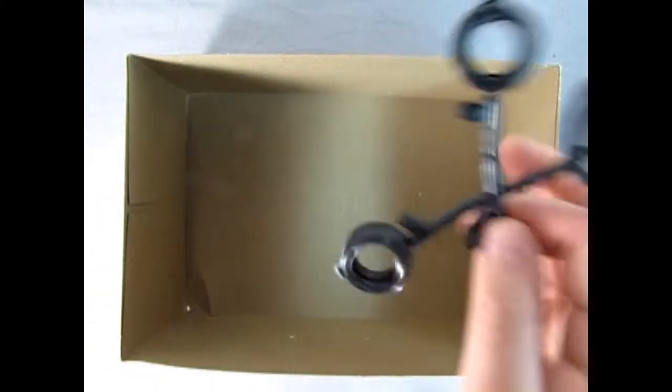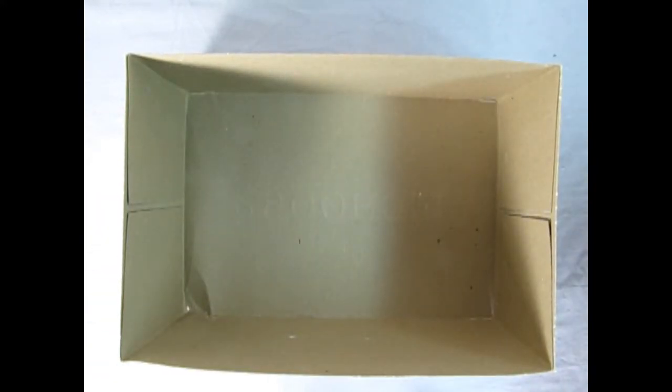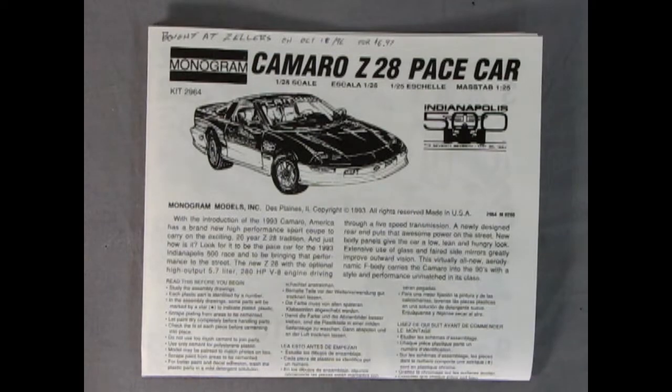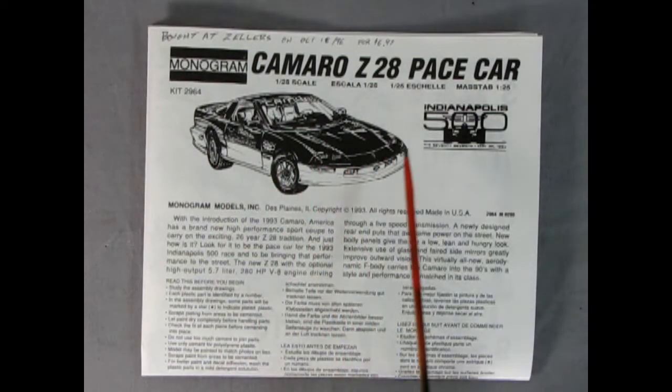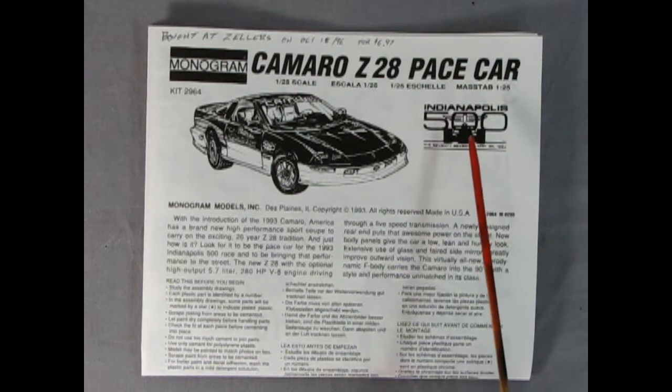So now I'm going to clear the box out of the way and we can take a look at the instruction sheet. Here we have our instruction sheet with a wonderful illustration of the Camaro Z28 pace car, as well as the Indianapolis 500 logo.